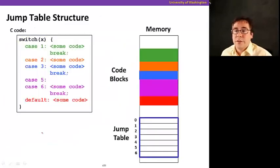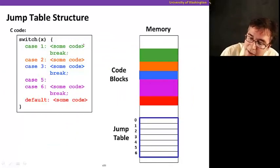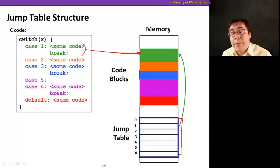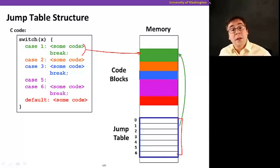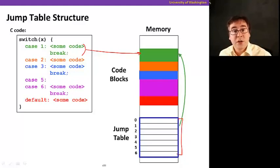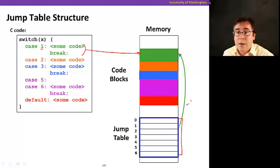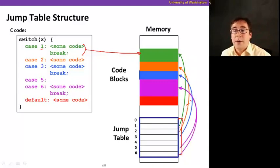Here's another way of looking at this more visually. I have a switch statement, and for each of the cases I have the corresponding region of memory — just do the color matching there. Our jump table is going to map back to the corresponding memory region that implements that block of code corresponding to the case statement. So one is green, meaning the entry one here has to point to green. Same thing for orange, and so on.